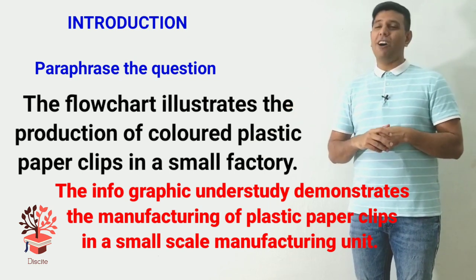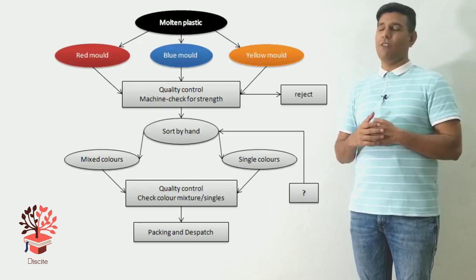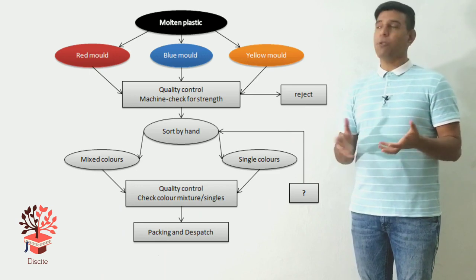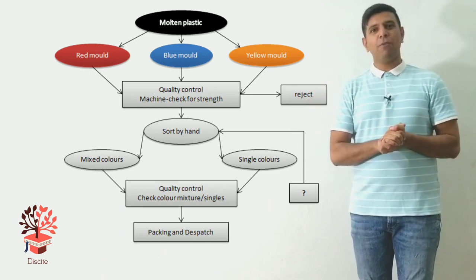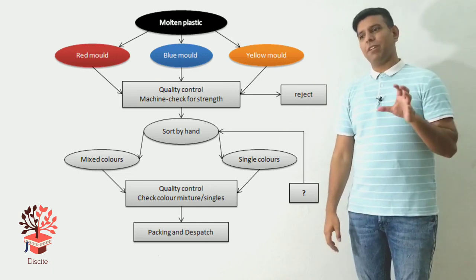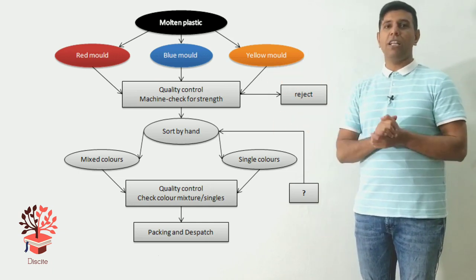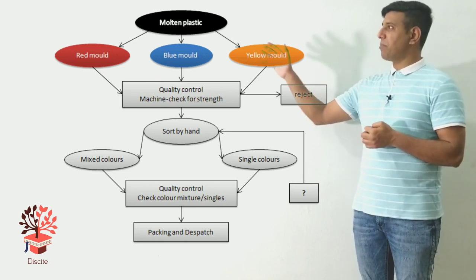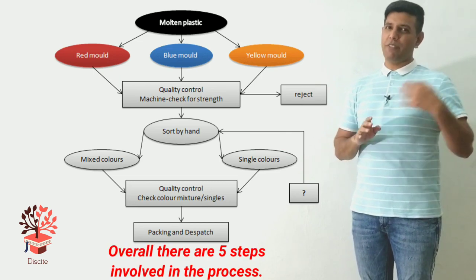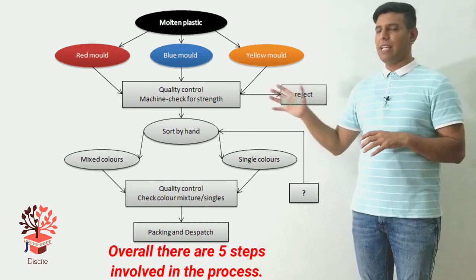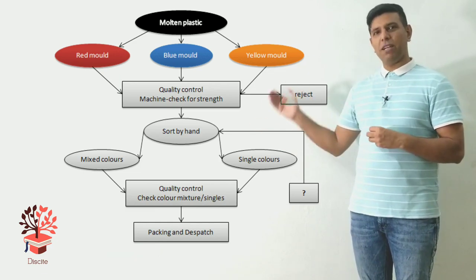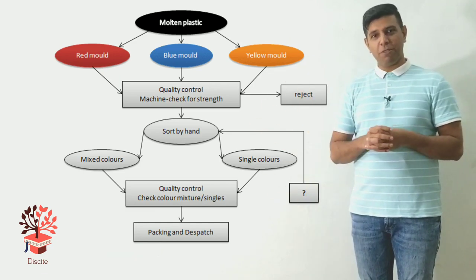Overall, there are five steps involved in the production of the paper clips - that's what we need to talk about. When you're talking about the flowcharts, in the overall, talk about how many steps are there. And if you think you don't have enough words, you can even talk about how many steps are there, starting with this and finishing with that. But if you think you have enough to write about later, then how many steps are there is more than enough in the overall. And then you go on and talk about the steps that we've just talked about.